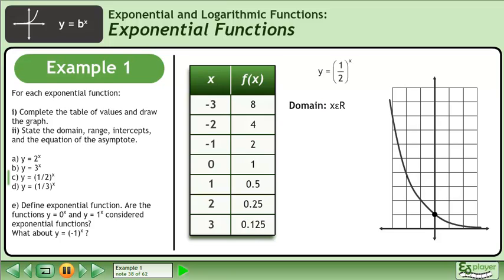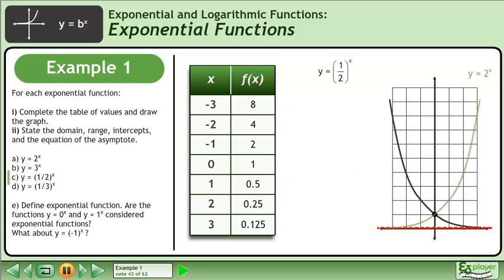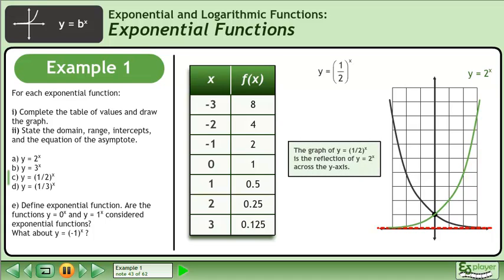The domain is x belongs to the set of real numbers. The range is y belongs to the set of real numbers, with the restriction that y is greater than 0. There is no x-intercept. The y-intercept is (0, 1). The equation of the asymptote is y equals 0. The graph of y equals 1 half to the power of x is the reflection of y equals 2 to the x across the y-axis.